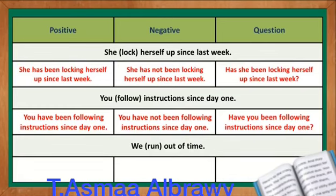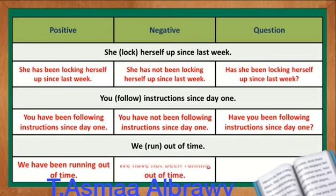The last one: We run out of time. The verb is run. The correct positive statement is: We have been running out of time. The negative sentence is: We have not been running out of time. And the question is: Have we been running out of time? Did you get it right?